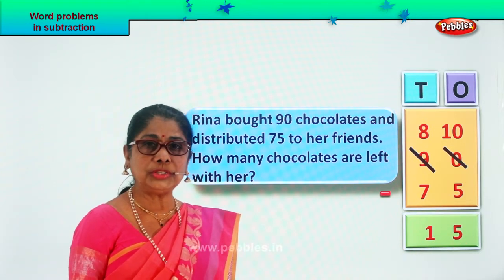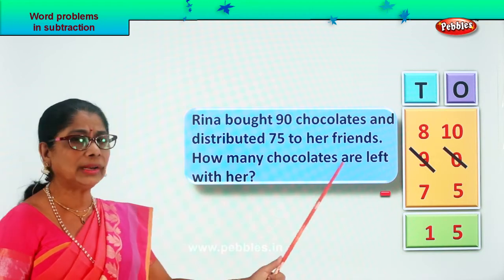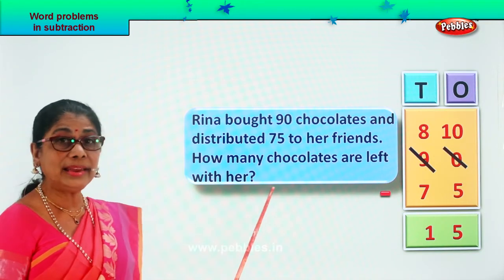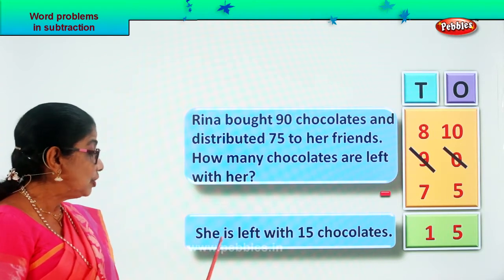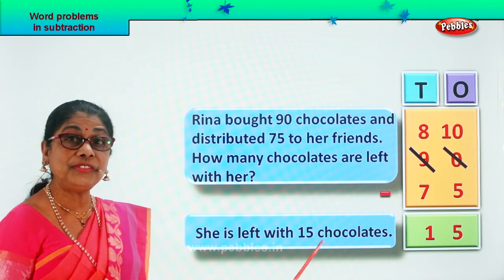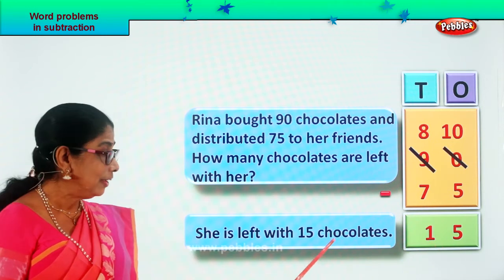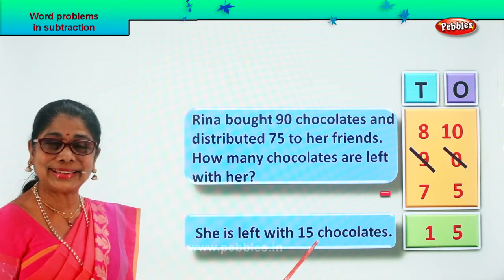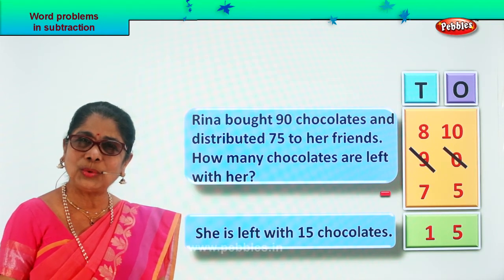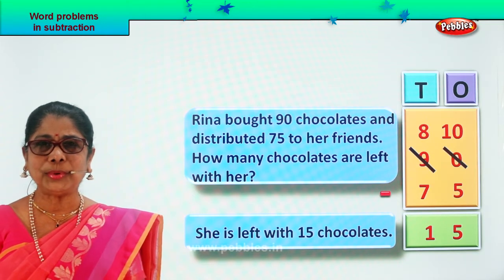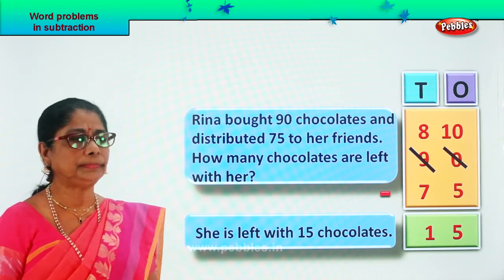The answer is 15 ones. What is your question, children? How many chocolates are left with Rina? She is left with 15 chocolates. Rina is left with 15 chocolates — that is your answer. Did you enjoy doing the word problem with carryover? Good. Let's take another new sum.